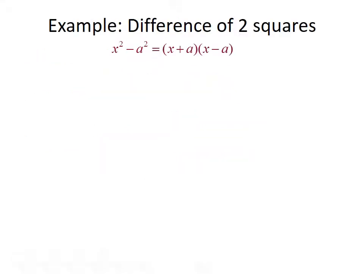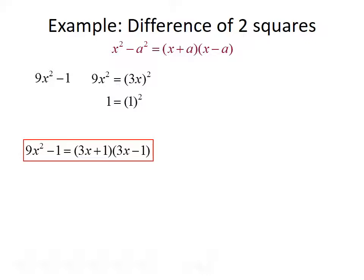Let's do a couple of examples with the difference of two squares. Remember the formula is x squared minus a squared equals x plus a times x minus a. For our first example, we want to factor 9x squared minus 1. This looks like the difference of two squares. 9x squared can be written as 3x quantity squared, and 1 can be written as 1 squared. So 9x squared minus 1 can be factored as 3x plus 1 times 3x minus 1.